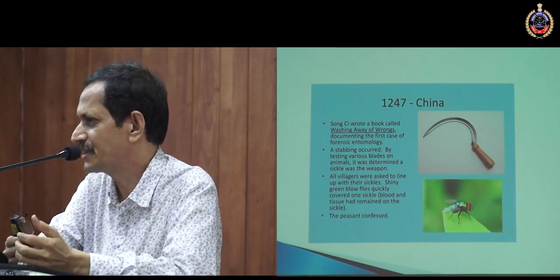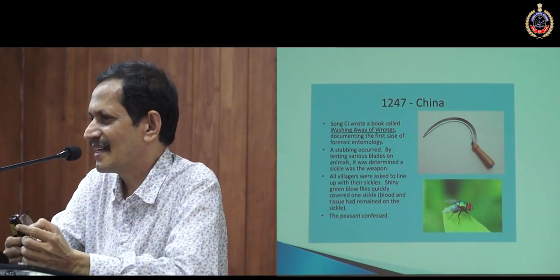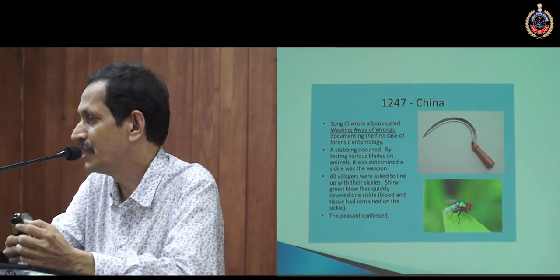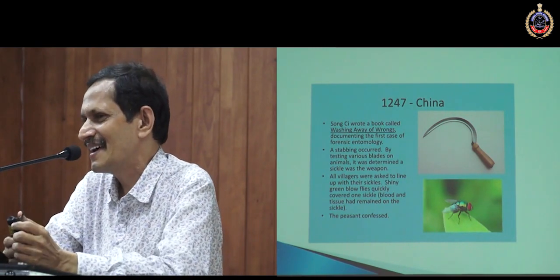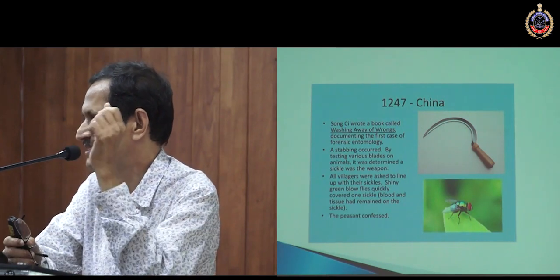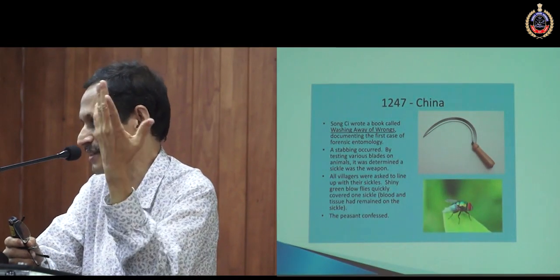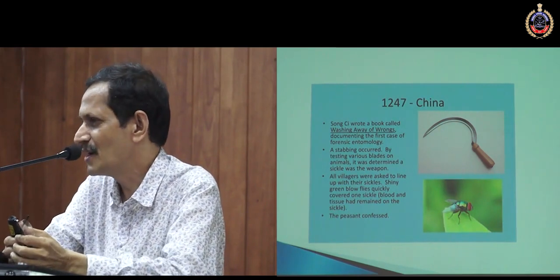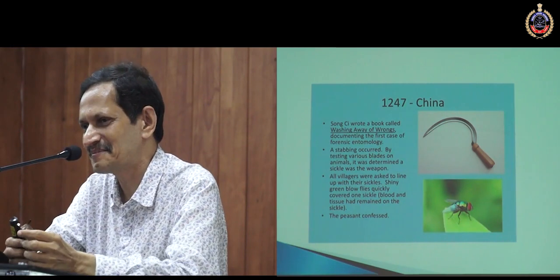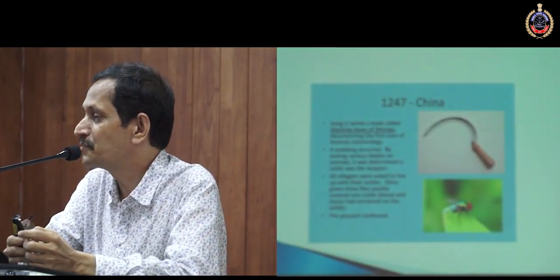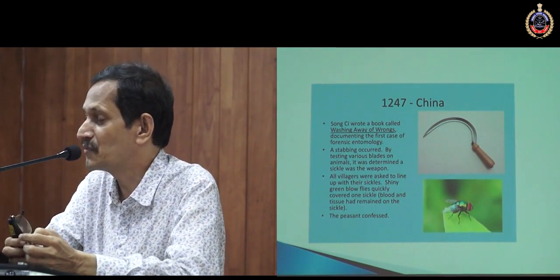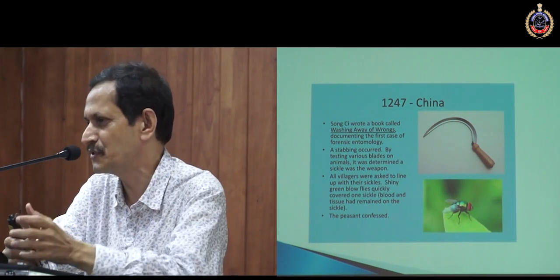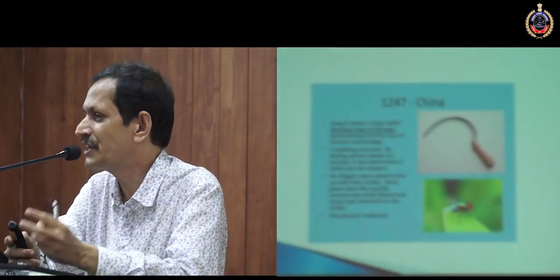So the local investigator was invited. What he did — he ordered the villagers to bring their sickles to a particular place. So everybody brought the sickles. And interestingly, one of the sickles attracted flies. Blowflies — green color and blue color — they are called blowflies. So blowflies were attracted to a particular sickle. Later, the owner of that sickle was interrogated, and he confessed that the crime was committed by him. Probably this was the first incidence of using forensic entomology, or using insects in criminal investigation.